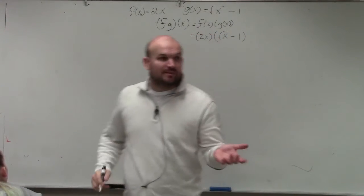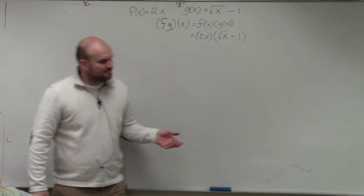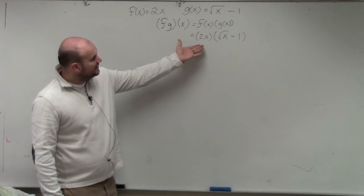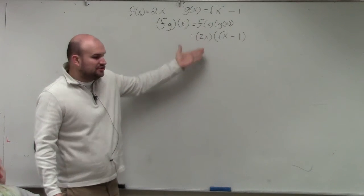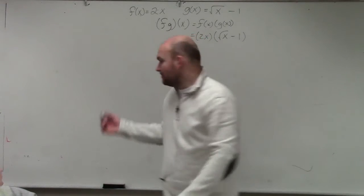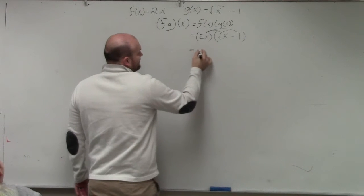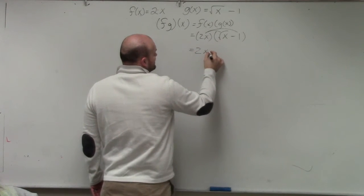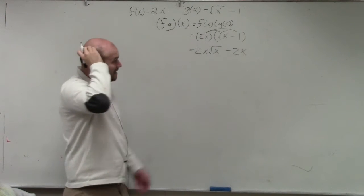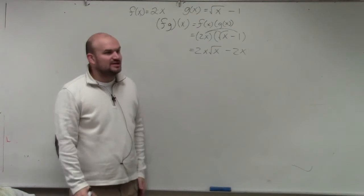Now, the problem did say to write the domain as well, so we want to find the domain of the product. This is problem number 10. I can apply the distributive property, but I can't multiply a term outside of a radical inside a radical, so there's really not much I can do as far as simplifying. I can write this as 2x times the square root of x minus 2x, or leave it in factored form — but that's really it.